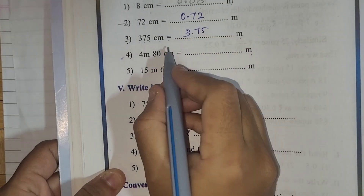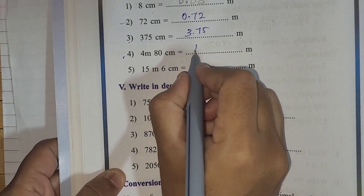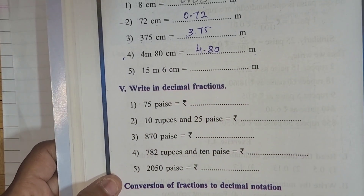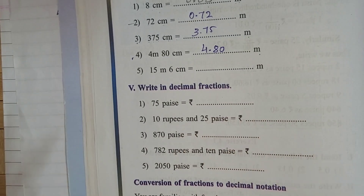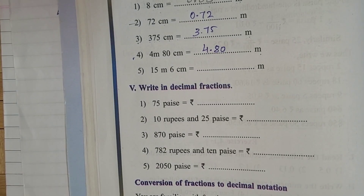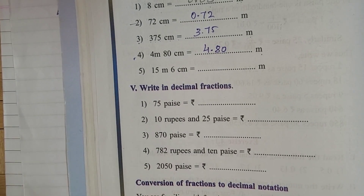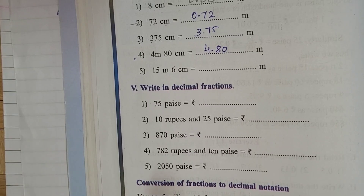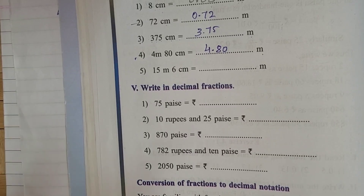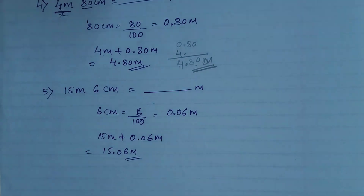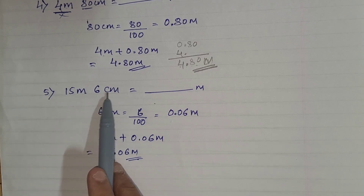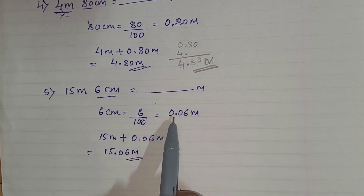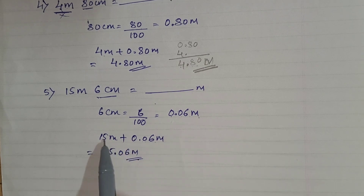So 4.80 meters is your answer. Next: 15 meters 6 centimeters equals dash meters. Try to solve it yourself — pause the video, then check your answer. The answer is 15.06 meters. Convert 6 centimeters: 6/100 equals 0.06, then add to 15 to get 15.06 meters.